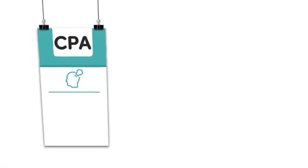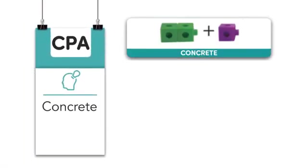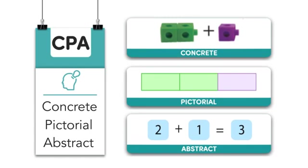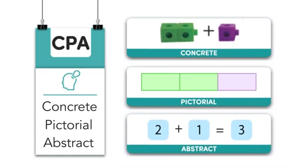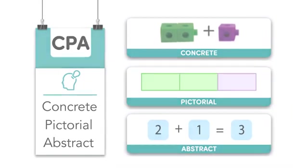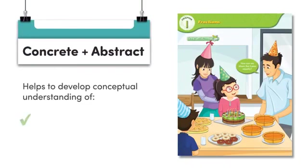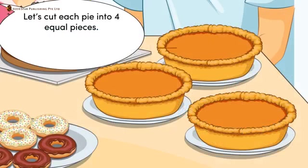Targeting Mathematics adopts the Concrete Pictorial Abstract Approach, an instructional heuristic based on Brunner's conception of the inactive, iconic, and symbolic modes of representation. Pupils are provided with concrete experiences through the use of concrete materials to develop conceptual understanding of mathematical ideas and abstract representations.